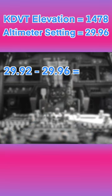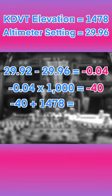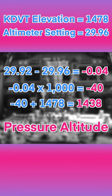29.92 minus 29.96 equals negative 0.04. Negative 0.04 times 1000 equals negative 40. Negative 40 plus 1478 equals 1438 pressure altitude.